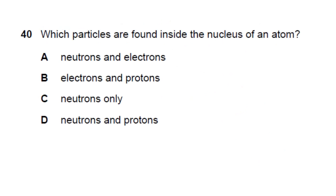Question 40: which particles are found inside the nucleus of an atom? The nucleus contains protons and neutrons. Answer: B. That completes the full paper — Cambridge O-level Physics 5054/11, May/June 2021.